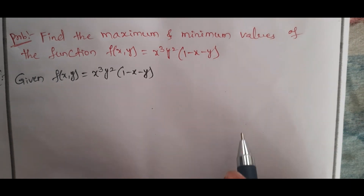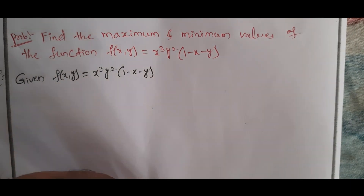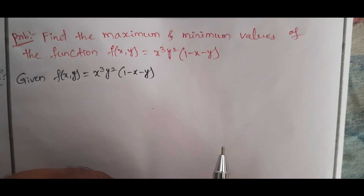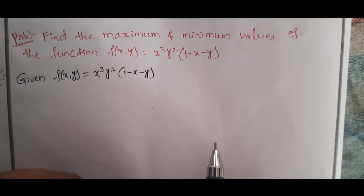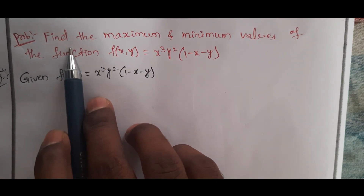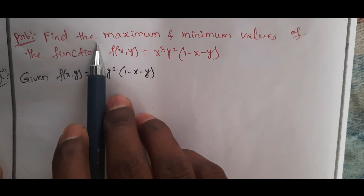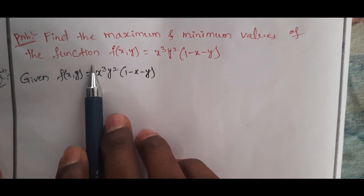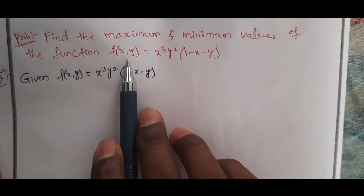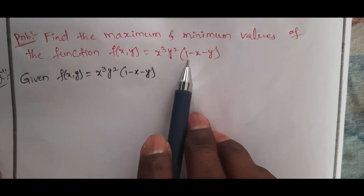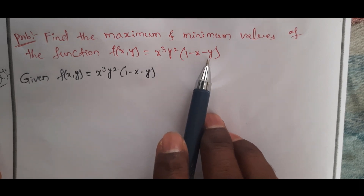Hi viewers, welcome to Rajashtekaloo. Today our topic is maximum and minimum values. See here, it is a partial differential equation problem. Find the maximum and minimum values of the function f(x, y) = x³y²(1 - x - y).